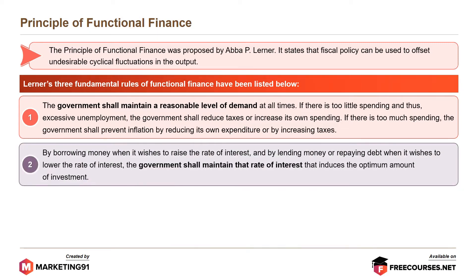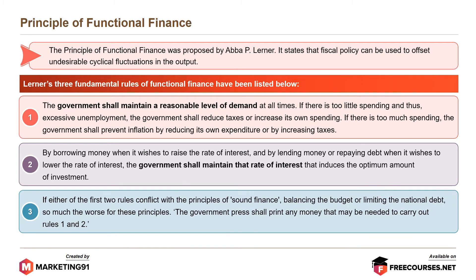Second, by borrowing money when it wishes to raise the interest rate, and by lending money or repaying debt when it wishes to lower the rate of interest, the government shall maintain the rate of interest that induces the optimum amount of investment. Third, if either of the first two rules conflict with the principles of sound finance — balancing the budget or limiting the national debt — so much the worse for these principles; the government shall print any money that may be needed to carry out Rules 1 and 2.